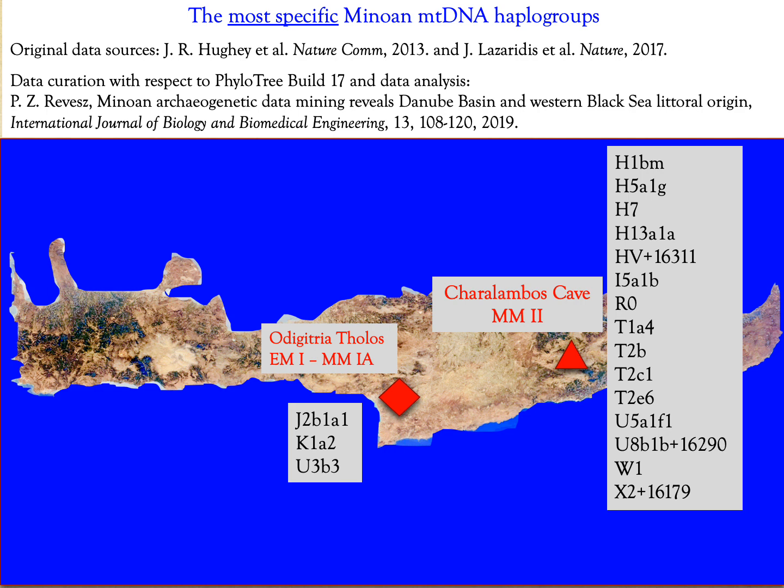We found that the most specific mtDNA haplogroups were these three at the Odigitria tholos tomb and these 15 at the Kharalambos cave. The first is a mostly early Minoan site, while the second is a middle Minoan site from a few centuries later.